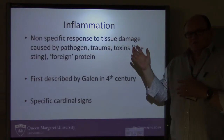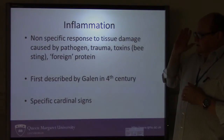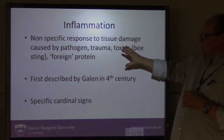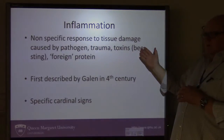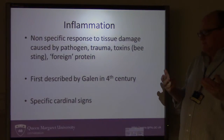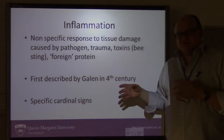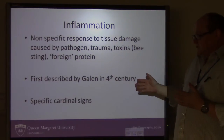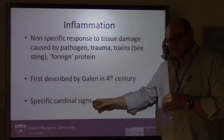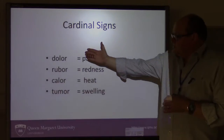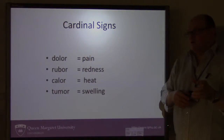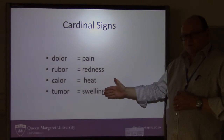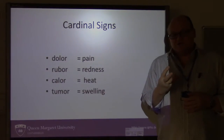Basically, inflammation is a non-specific response to tissue damage, and it's caused by a pathogen, some form of trauma, a toxin, or a foreign protein — a toxin might be something injected in a sting, like a bee sting. The first person to describe the phenomenon was the clinician Galen in the 4th century, and he identified the key cardinal signs, using the terminology dolor, rubor, calor and tumour, which translate to pain, redness, heat and swelling — the four cardinal signs of inflammation.